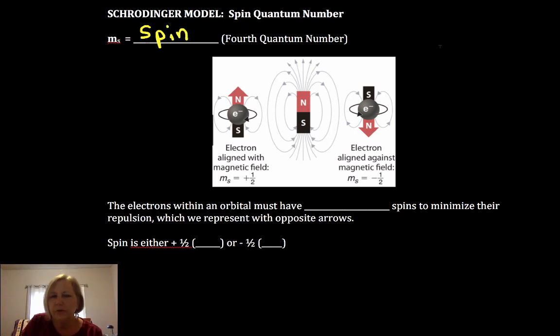What we find is when we have a moving charged particle, they generate a magnetic field and we find with electrons they can align either with or against an external magnetic field such as they would find in the structure of an atom. And those have values that are assigned plus one-half and minus one-half.